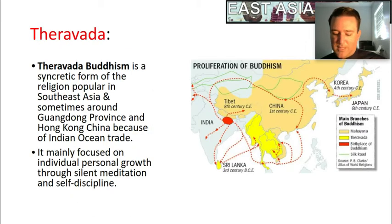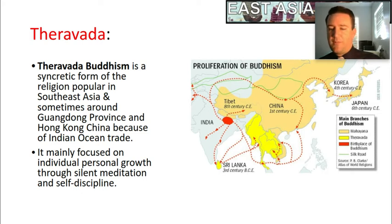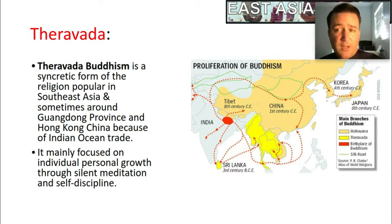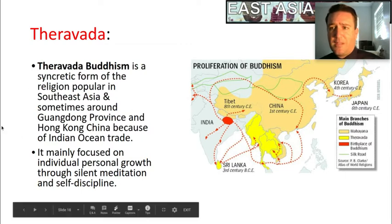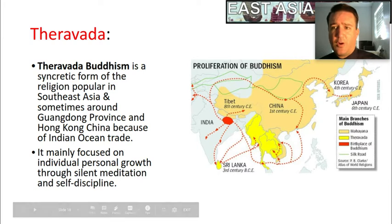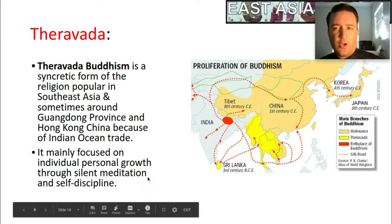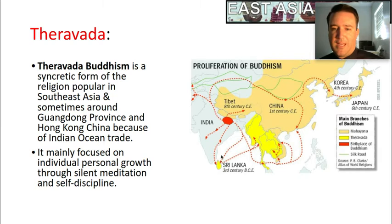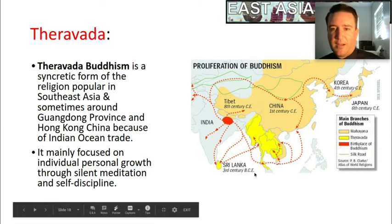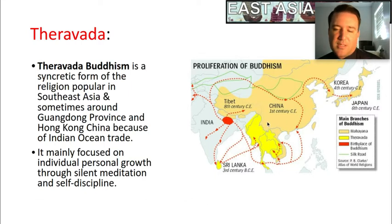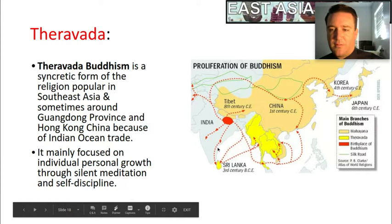Theravada Buddhism is the branch found mostly in Southeast Asia. It is considered one of the more traditional branches, focusing mainly on individual and personal growth — trying to get rid of things that cause suffering. It focuses a lot on silent meditation and self-discipline. You can see on the map where Theravada Buddhism is concentrated today.